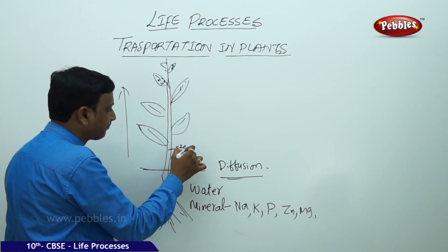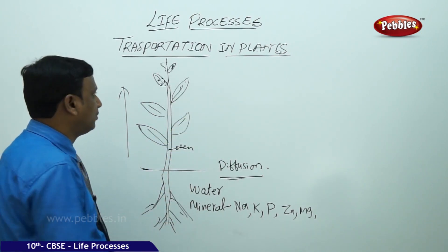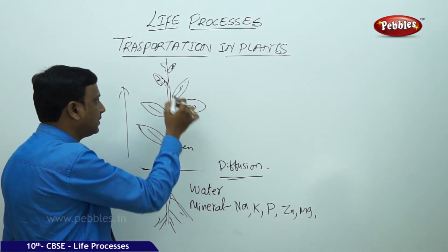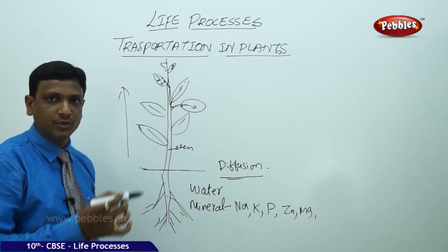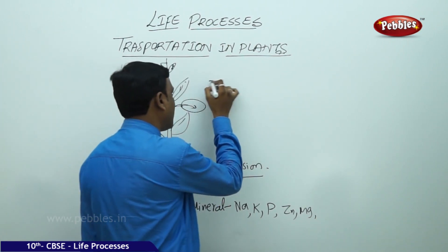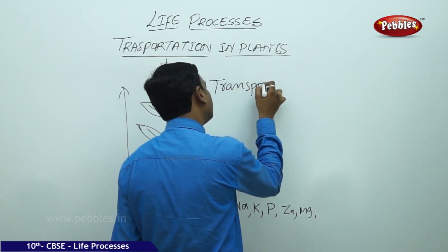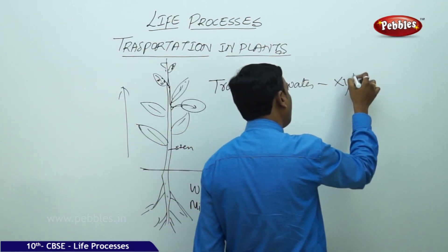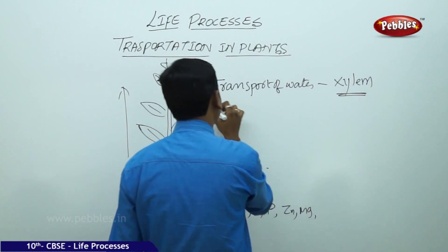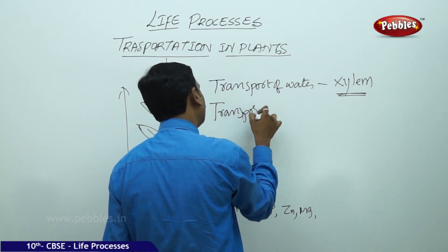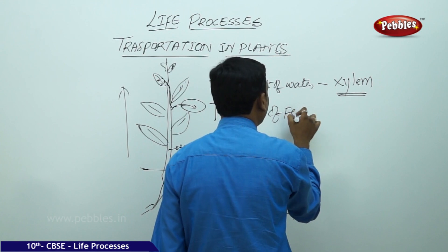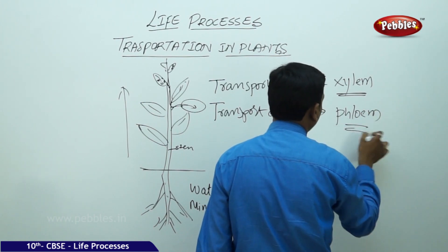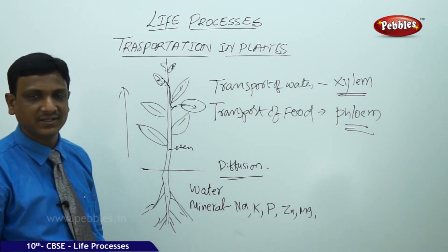Sometimes food is stored in the fruit. The food is produced in the leaf and has to be transported to the fruit. The transport of water and minerals is done by a special tissue called xylem, and the transport of food and other materials is done by phloem. These are the two different tissues which form the vascular tissue.